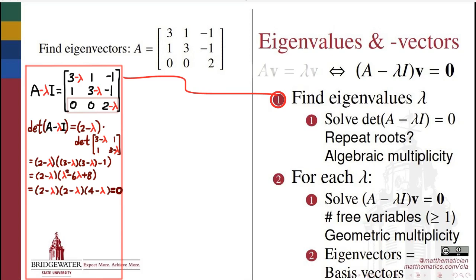We set that polynomial equal to zero and solve the resulting equation for λ. This is in general a complicated process because solving polynomial equations can be very challenging — sometimes the solutions are irrational, sometimes they're not even real. In this example the characteristic polynomial factors, and we can determine that the eigenvalues are 2 and 4.